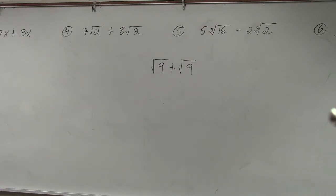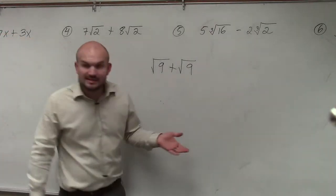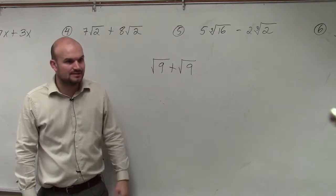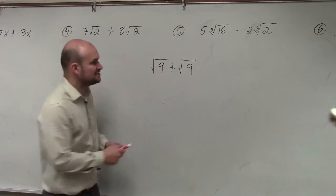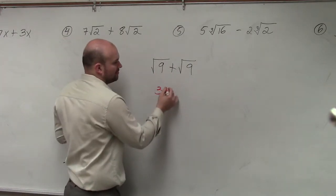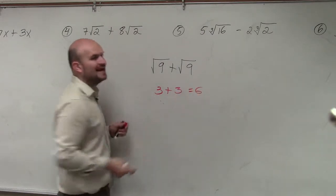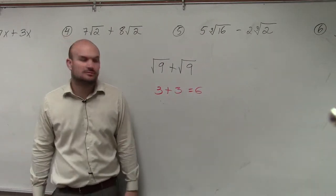The square root of 9 plus the square root of 9 for a special reason. The reason being is I know what the square root of 9 is. The square root of 9 is 3 plus 3. So I know the actual answer of this is going to be 6.